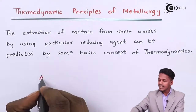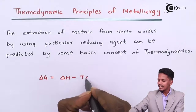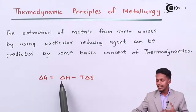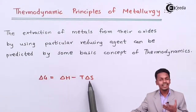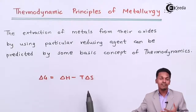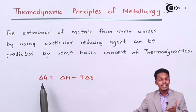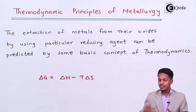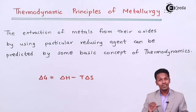The formula is: delta G equals delta H minus T delta S, where delta G is the Gibbs free energy, delta H is the change in enthalpy, T is the temperature, and delta S is the entropy. It is actually the delta G which will decide whether the reaction is spontaneous or not.